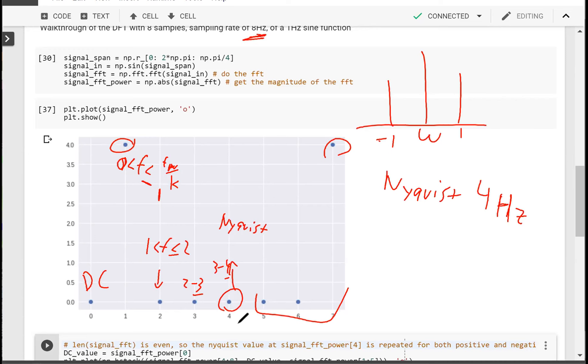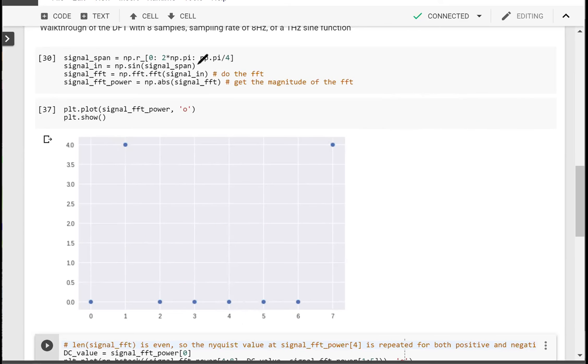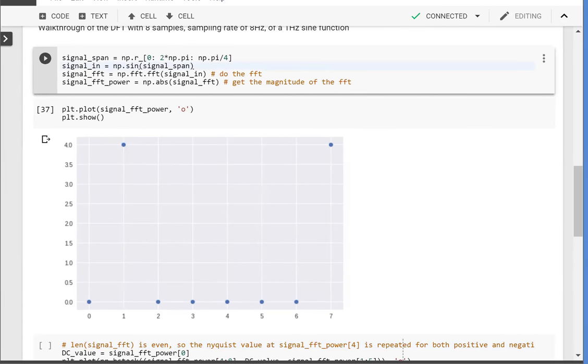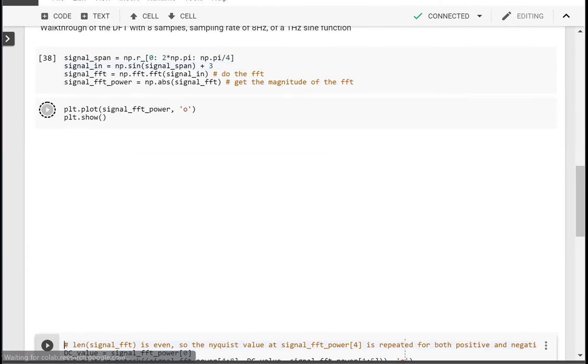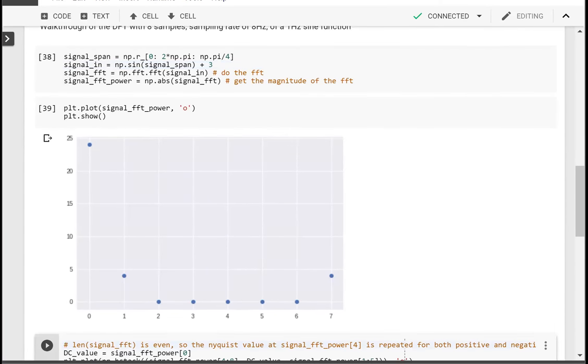If you don't believe that this is the way it works, let's take a very quick modification. Let's come back to this and let's just add three. Shift everything up by three. How will the plot change? Look at that. Everything is the same, but we have a DC value that jumped all the way up to here.